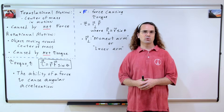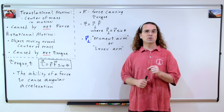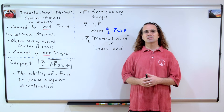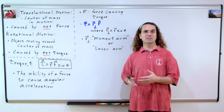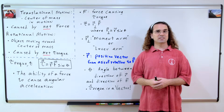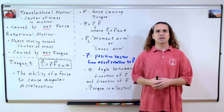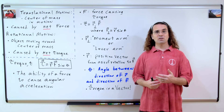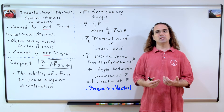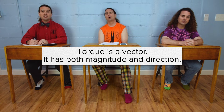F is the force causing the torque. This R perpendicular is called either the moment arm or the lever arm, and it equals R times sine theta. This means that sometimes the equation for torque is given as the moment arm times the force. The R vector is the position vector from the axis of rotation to the point the force is applied to the object. And theta is the angle between the direction of the R vector and the direction of the force vector. The arrow symbol over tau means torque is a vector, which means torque has both magnitude and direction.